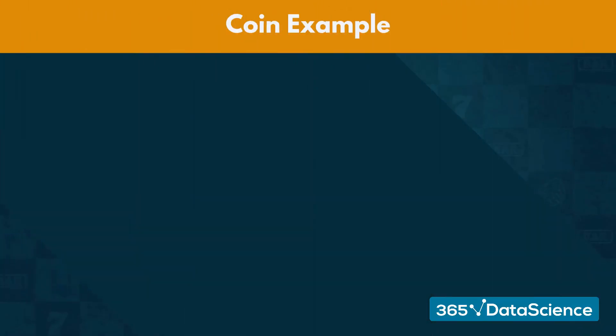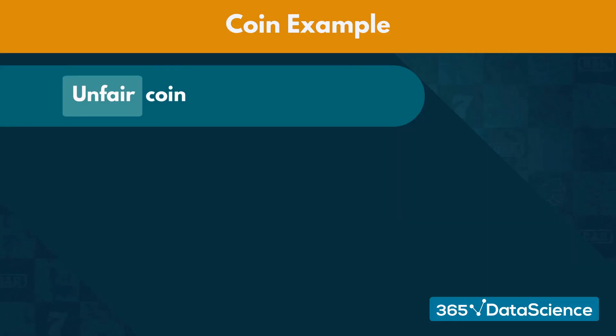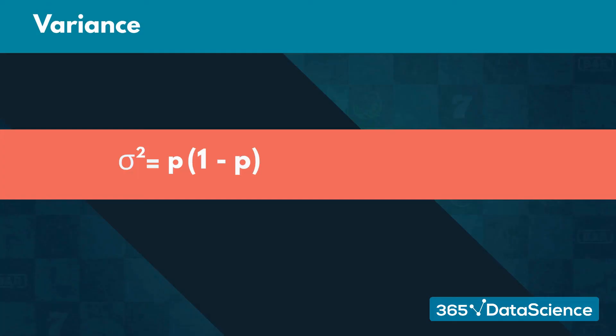For example, consider flipping an unfair coin. This coin is called unfair because its weight is spread disproportionately and it gets tails 60% of the time. We assign the outcome of tails to be 1 and p to equal 0.6. Therefore the expected value would be p or 0.6. If we plug in this result into the variance formula, we would get a variance of 0.6 times 0.4 or 0.24.